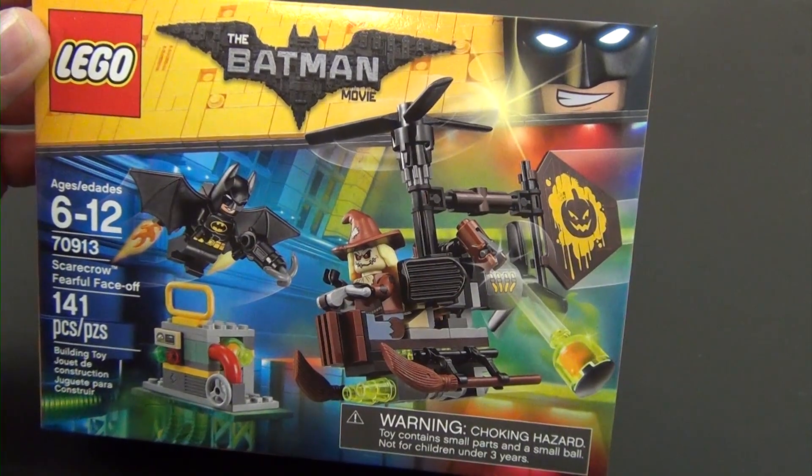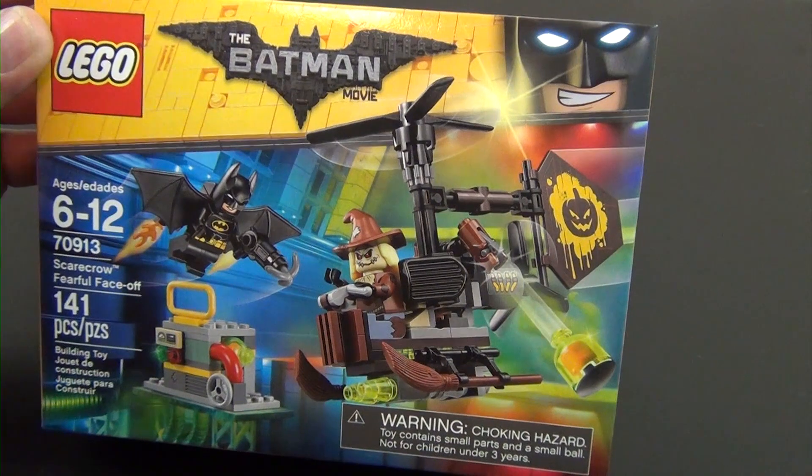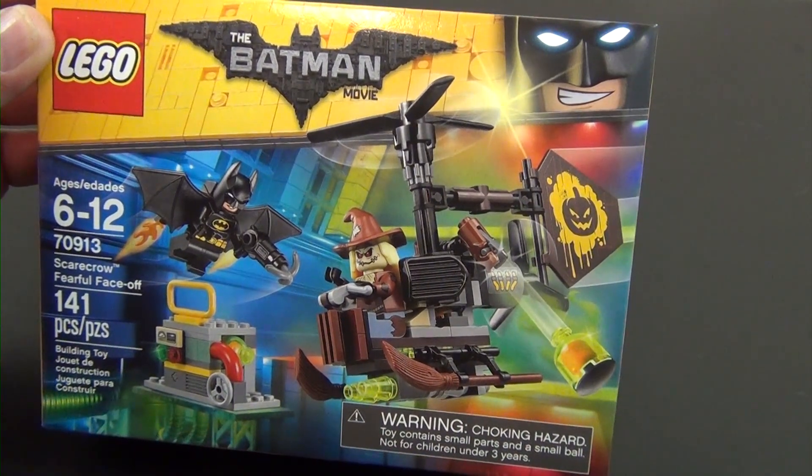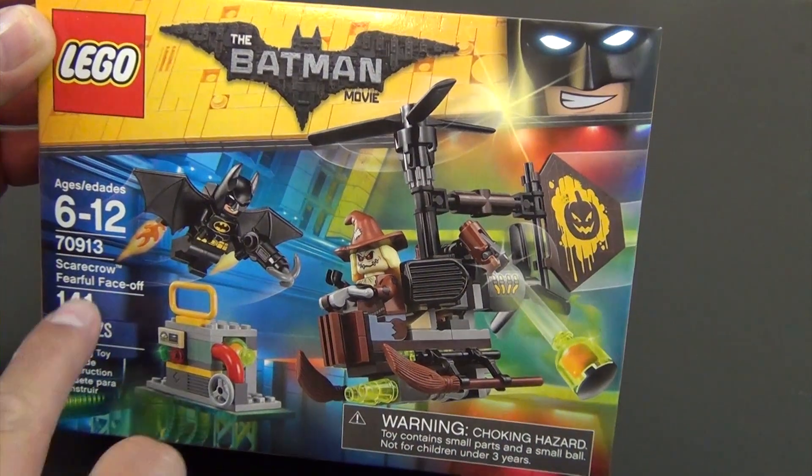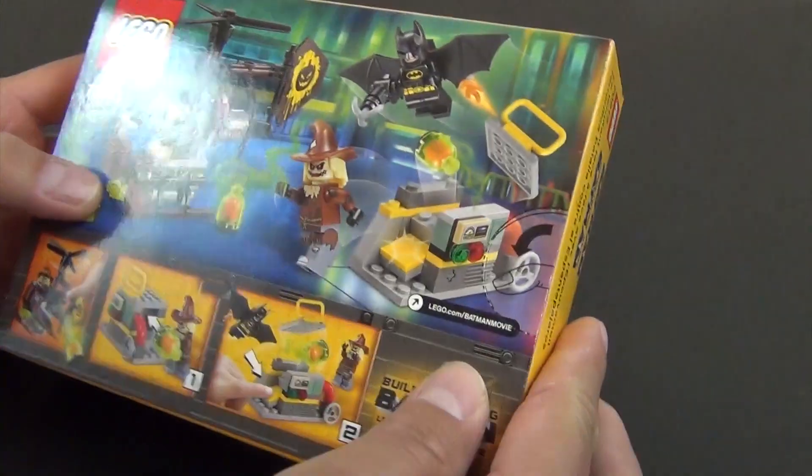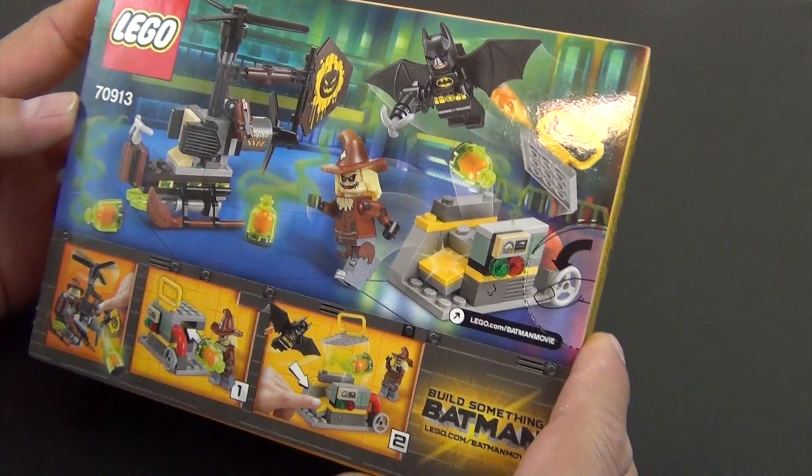Hey everyone, welcome back to the Hidden Brick, where today we're going to build the LEGO Batman movie Scarecrow Fearful Face-off set, number 70913. 141 pieces, so small set. This is from the second wave.